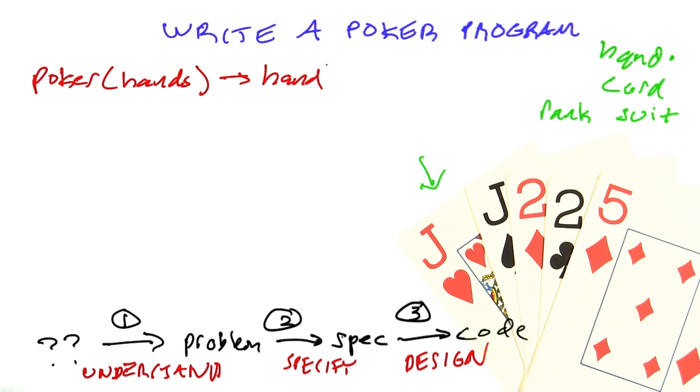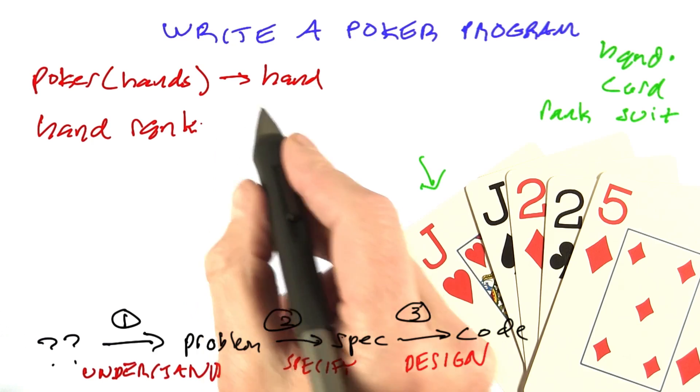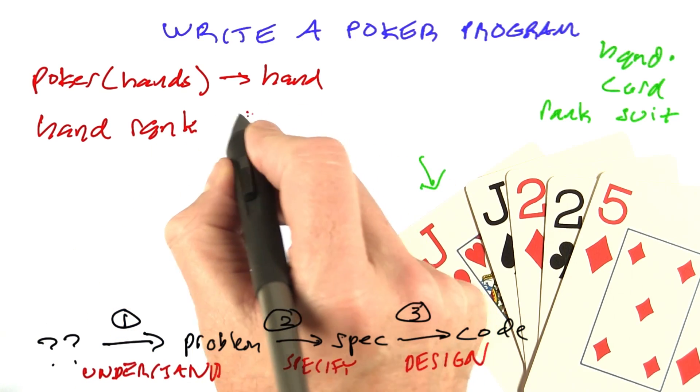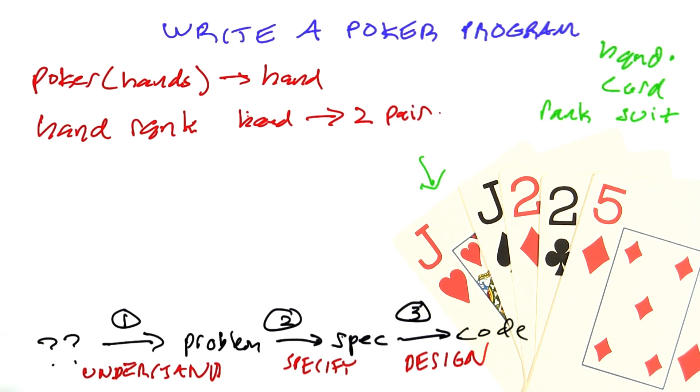This is another concept that we have, the concept of a hand rank, which takes a hand and maps to something like, in this case, two-pair, and maybe with some more details.